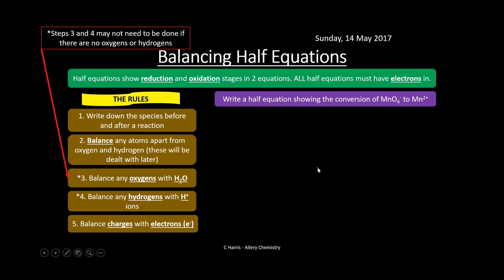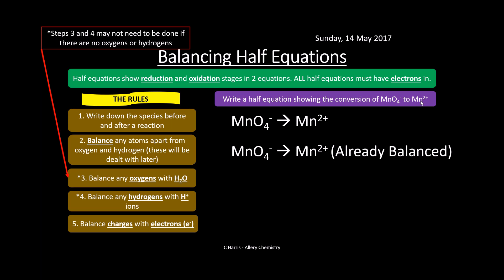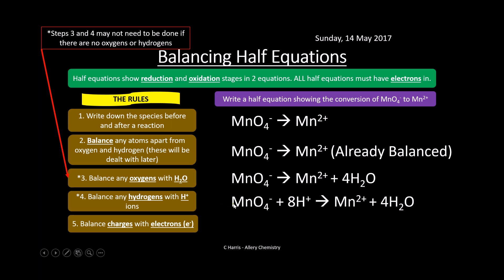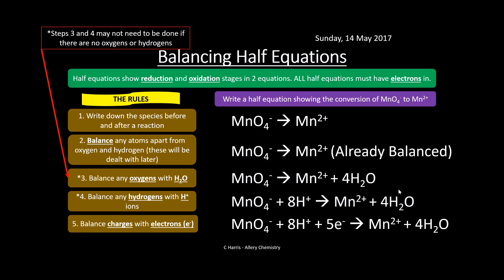Now let's balance the half equation for the oxidising agent MnO₄⁻ going to Mn²⁺. Write the species: MnO₄⁻ → Mn²⁺. Manganese atoms are already balanced. Balance oxygens: add 4H₂O on the right. Balance hydrogens: add 8H⁺ on the left. Now balance charges: the left side has a total charge of plus seven (8 plus from H⁺ minus 1 from MnO₄⁻) and the right side is plus two, so add 5 electrons to the left. The balanced half equation is: MnO₄⁻ + 8H⁺ + 5e⁻ → Mn²⁺ + 4H₂O. This is the reduction step.